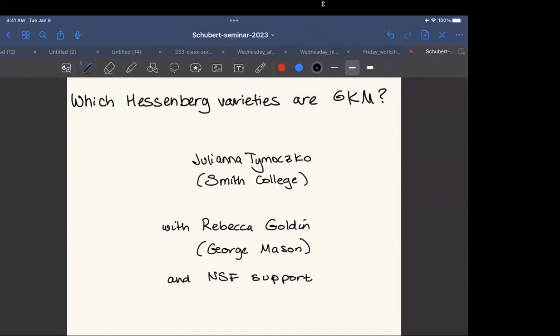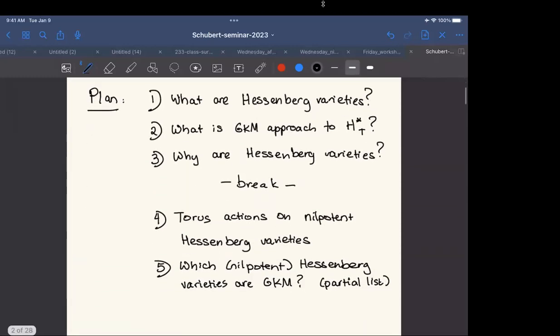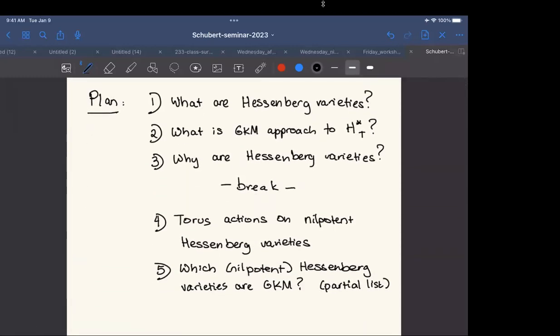Today we have Juliana Tomasco from Smith College who's going to talk about which Hessenberg varieties are GKM. I've taken you at your word about creating a talk that was accessible to graduate students, even a wide range of graduate students. So that's how we're going to start. Here's the basic plan.